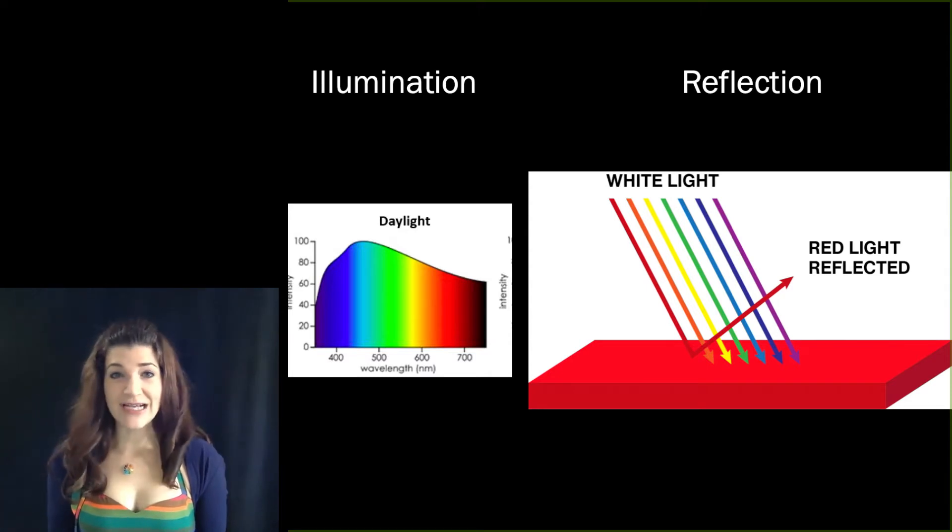So a red object in sunlight, that is white light which has all wavelengths present simultaneously, appears red to us because it is absorbing all of the shorter and medium wavelengths and reflecting only the long wavelengths. So the long wavelengths are all that actually reach our eyes.